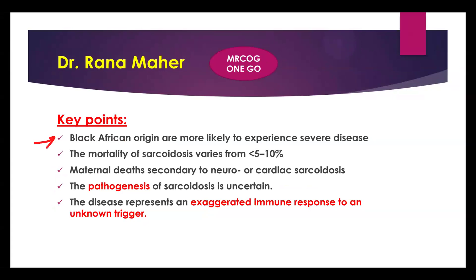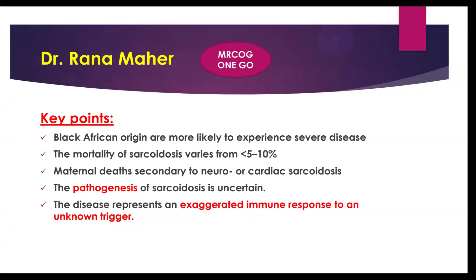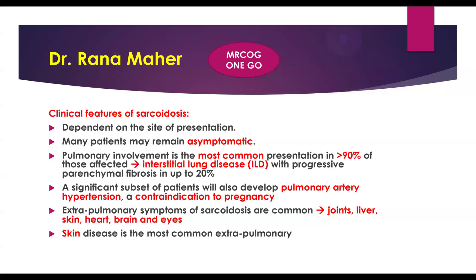Regarding ethnic groups, Black African origin patients experience more severe disease. Mortality is around 5 to 10 percent, usually secondary to neuro- or cardiac sarcoidosis. The pathogenesis is uncertain — the disease represents an exaggerated immune response to an unknown trigger.